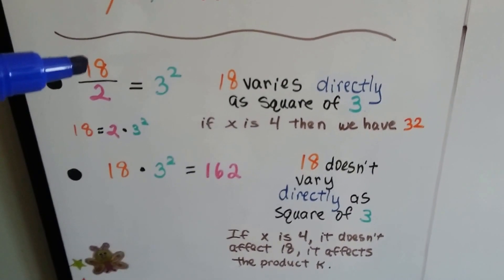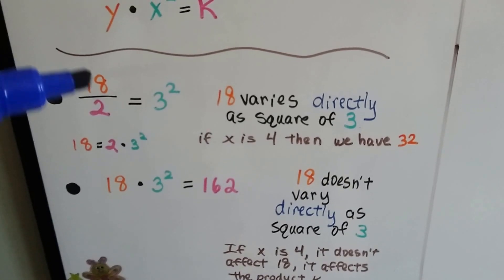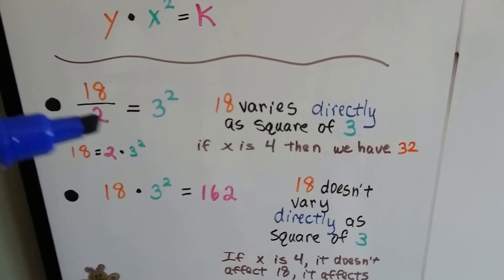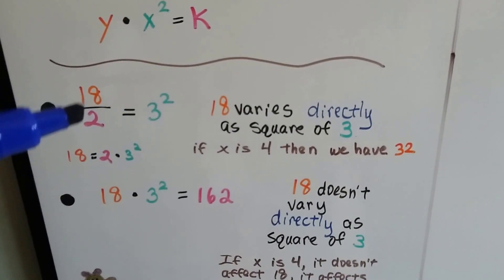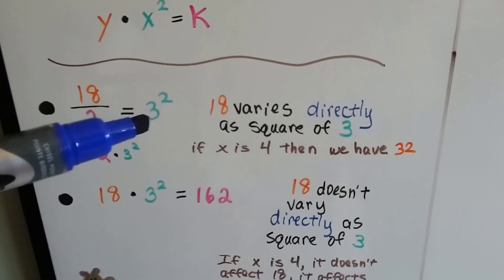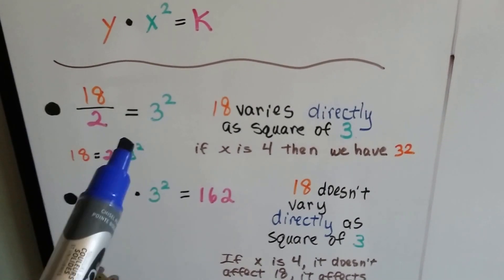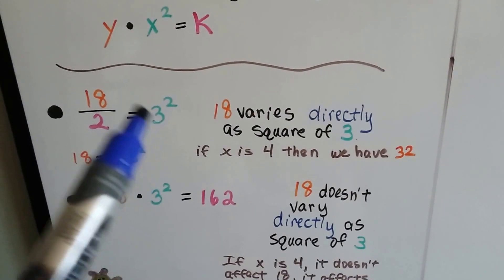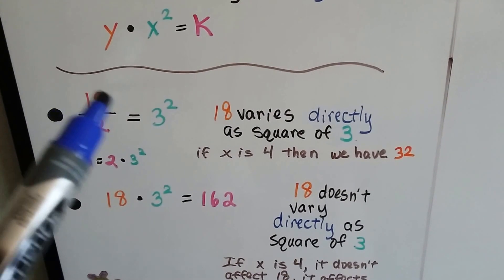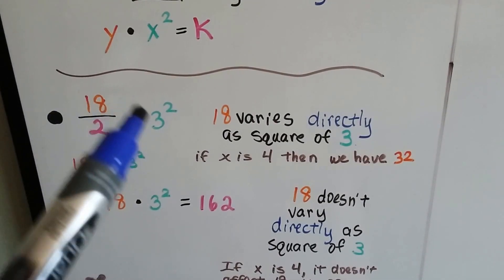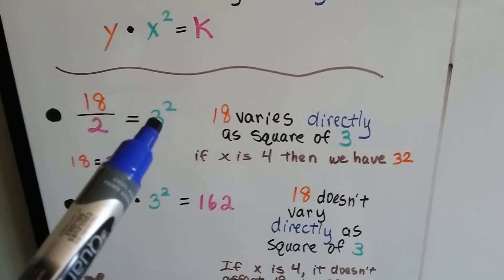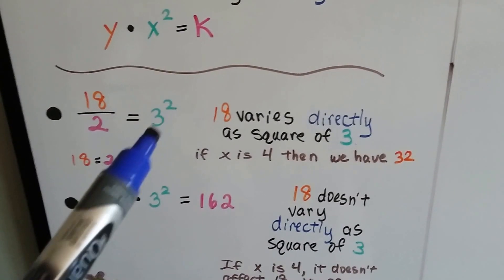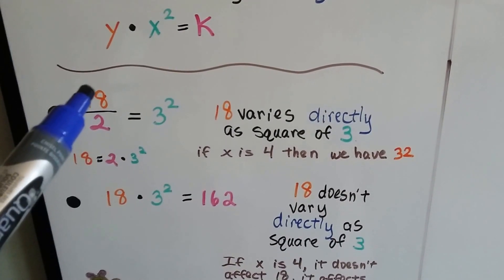If we have y's value as an 18 and k's value as a 2 and x as a 3, 3 squared, we have 18 divided by 2 equals 3 squared, which is a 9. If we change that 3 to a 4, that's going to make that change. So that y value, that 18, is going to vary depending on this value here. If this is a 4, then that means it's a 16, which means that's got to be a 32.